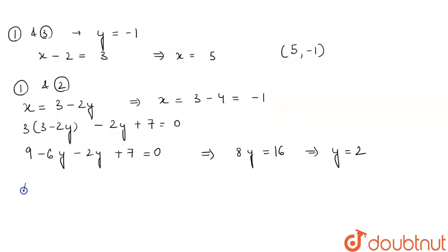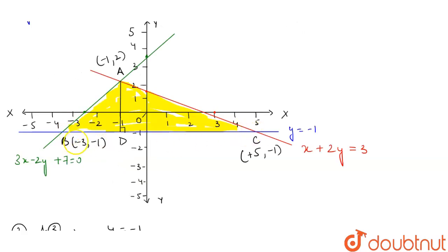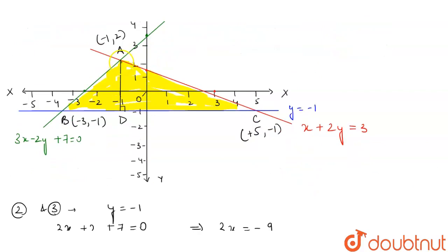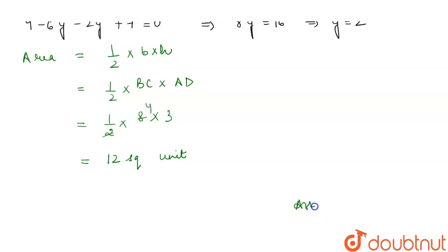Area of the triangle = (1/2) × base × height. The base BC goes from x = -3 to x = 5, which is 3 + 5 = 8 units. The height AD goes from y = 2 down to y = -1, which is 2 + 1 = 3 units. Therefore, area = (1/2) × 8 × 3 = 12 square units. This is the area of our triangle.